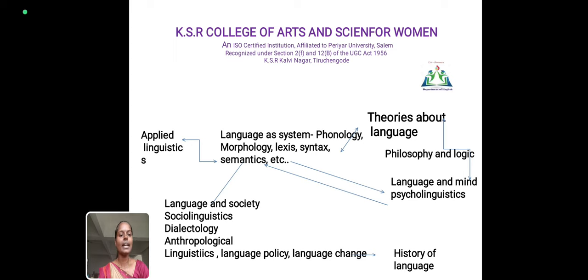History of language is also included. Language and mind refers to psycholinguistics, covering psychology and logical manner. We are using language and linguistics, and there are many theories in language and linguistics. Thank you.